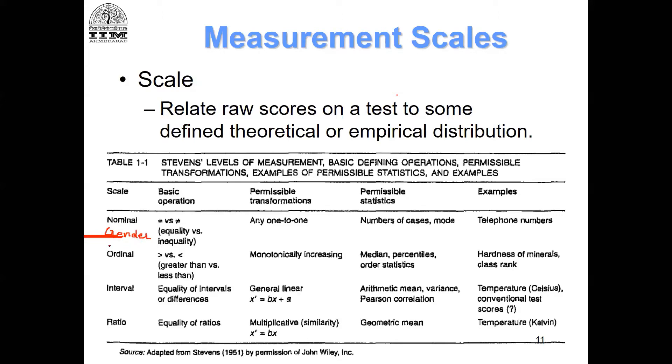With gender, you can say it is either male or female. You can only categorize. What statistic can you do on this? You can only do frequencies, which is essentially mode. You can count number of cases and categorize - that is the only thing you can do.